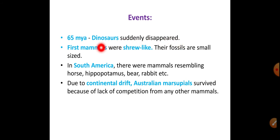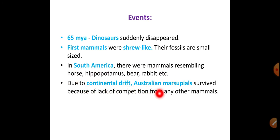The first mammals were shrew-like with small fossils. In South America, there were mammals resembling horse, hippopotamus, bear, and rabbit. Due to continental drift, Australian marsupials — like kangaroos — survived because of lack of competition from other mammals. When the continent divided due to river or mountain formation, the marsupials started living very independently.